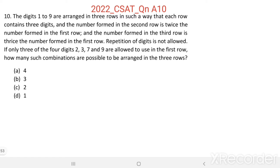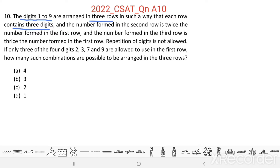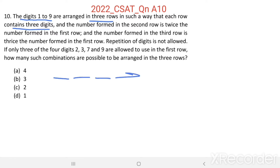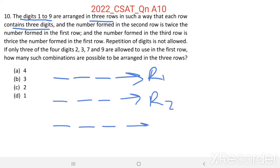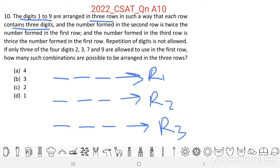We need to arrange 9 digits in 3 rows such that each row contains 3 digits — for example, 1, 2, 3 in the first row; 3, 4, 5 in the second row; and 7, 8, 9 in the third row. Each row contains 3 digits forming a 3-digit number.